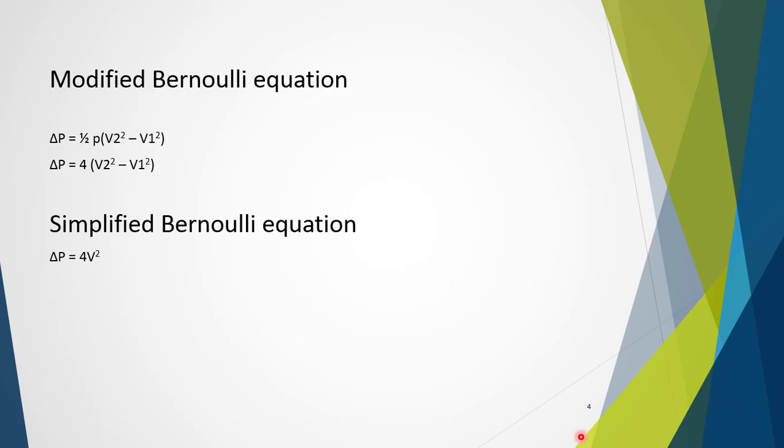In many instances of cardiac imaging, V1 is minimal — less than one metre per second — and plays a negligible effect when V2 is large, such as 64 minus 1 bearing little significance. So our calculation simplifies further to 4V². It is important to note that this does not define the pressure itself, but the pressure gradient — the change in pressure between two areas.